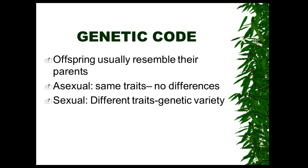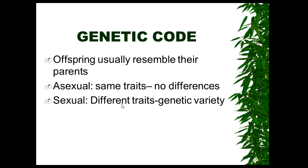Regarding the genetic code, offspring usually resemble their parents. When we talk about the genetic code, we're talking about DNA and RNA. With asexual reproduction — the A meaning without — there is only one parent, as seen in bacteria and jellyfish. In bacteria, they can simply break in half through asexual reproduction, meaning both have the same DNA. It wasn't a mixture of two DNAs, so they'll have the same traits with no differences. With sexual reproduction, we take two organisms' DNA, they combine, and you see different traits and genetic variety.